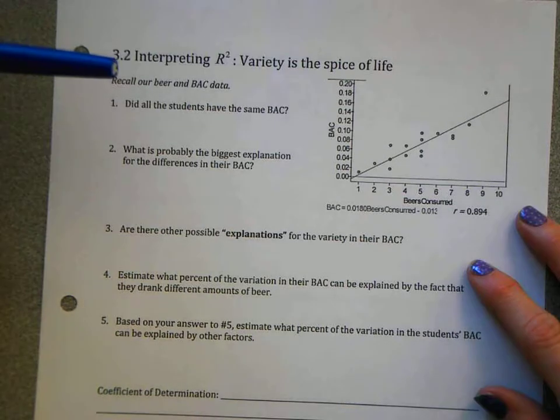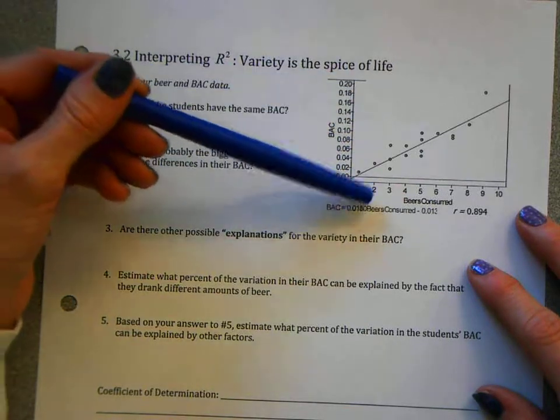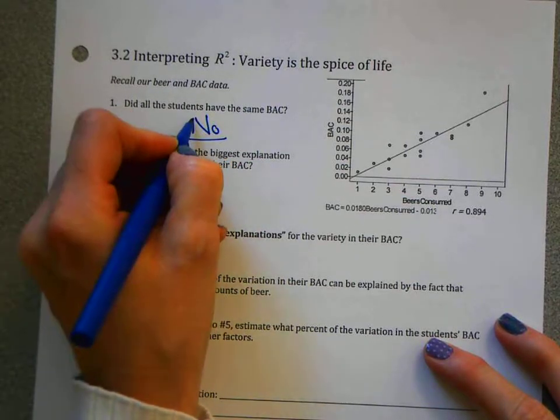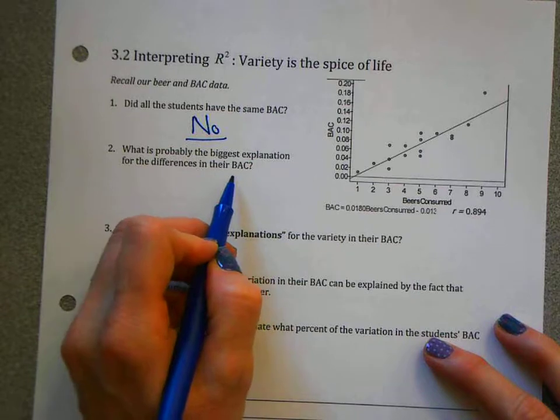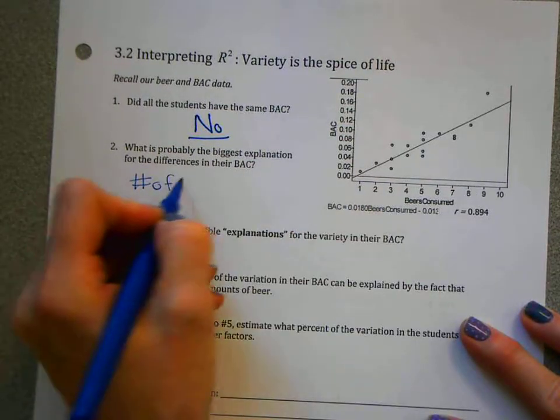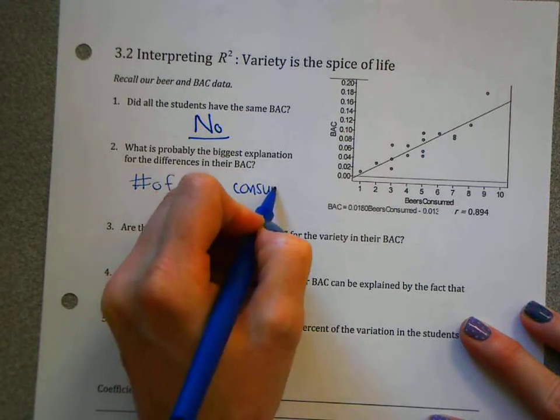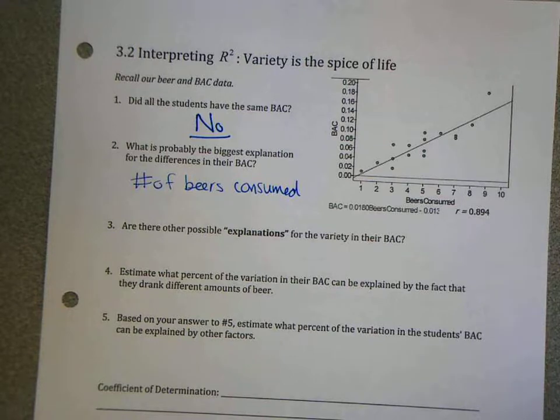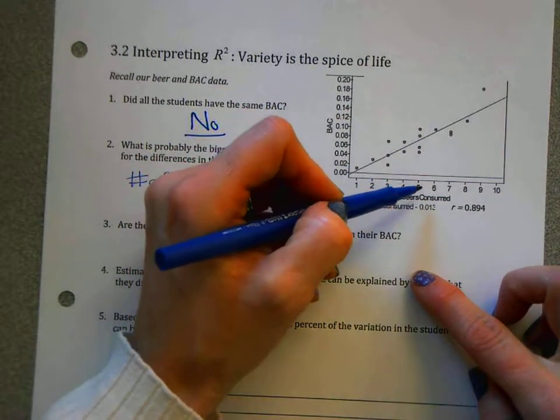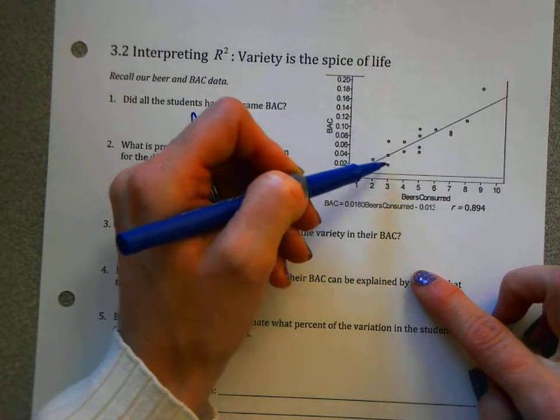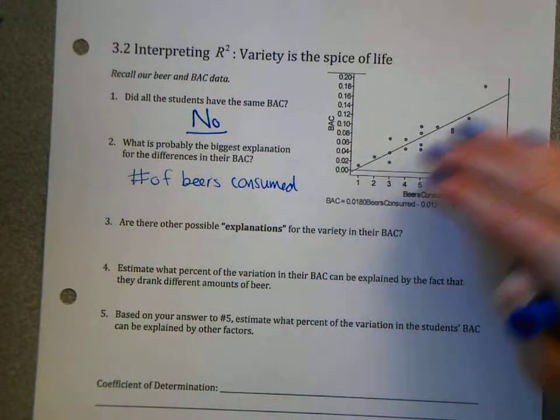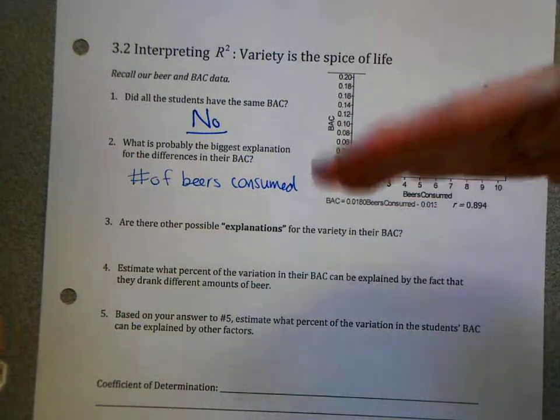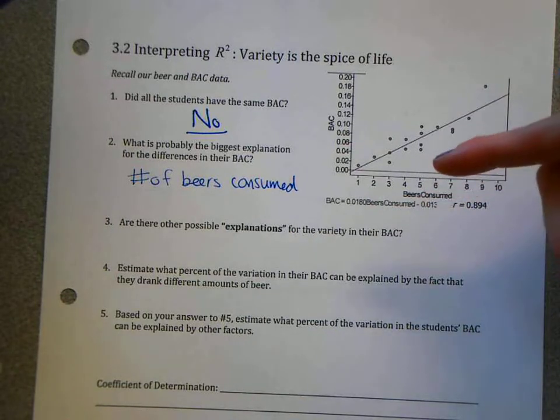So let's start with the fact that we see that there's a variety of blood alcohol contents throughout this data. Not all the students have the same blood alcohol content. But the biggest explanation for the difference is the number of beers they consumed, right? That's going to be what's making variations we see in the blood alcohol content. But we had some people that drank exactly the same number of beers, but had different blood alcohol contents. So we understand that even though this is a strong relationship, even though we see a very linear pattern here, beers is not the only thing that's attributing to why we have differences in our blood alcohol content.